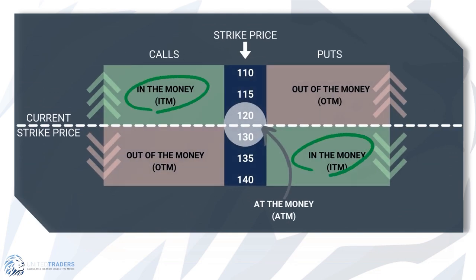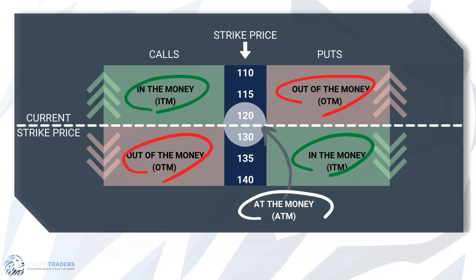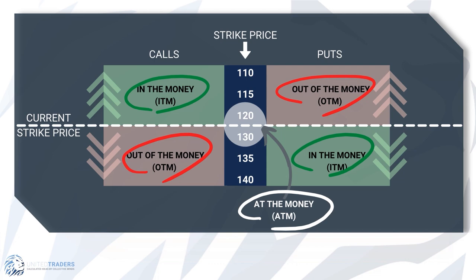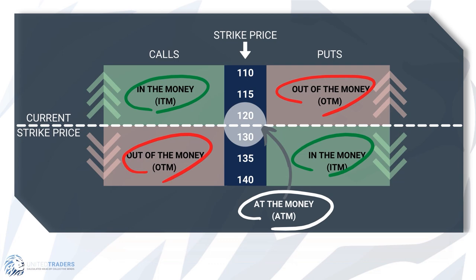In the money, out of the money, and at the money. In the money options can be exercised, and then the stock position can be closed at the market price for a profit. Call options whose underlying is above the strike, and put options whose underlying is below the strike, are in the money. Out of the money options cannot be exercised — you are paying either to buy the stock at a higher price (out of the money call) or to sell it at a lower price (out of the money put) compared to the market price.